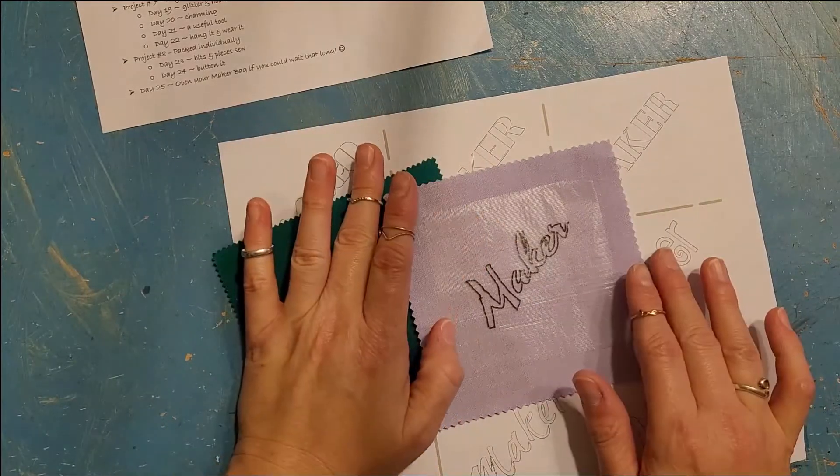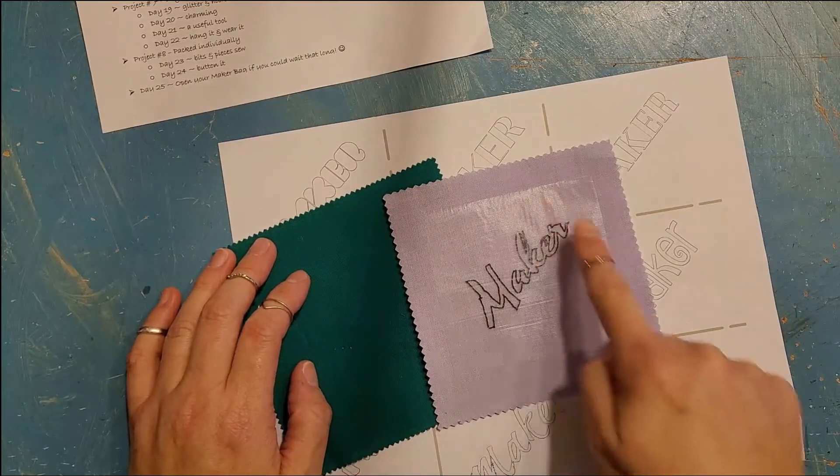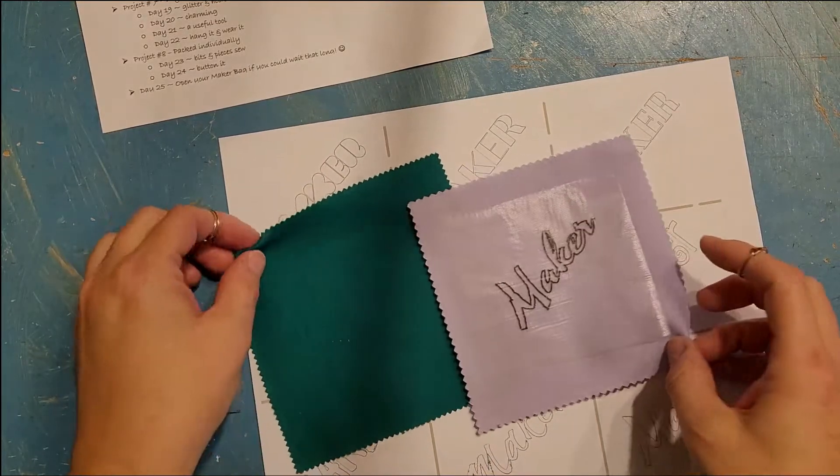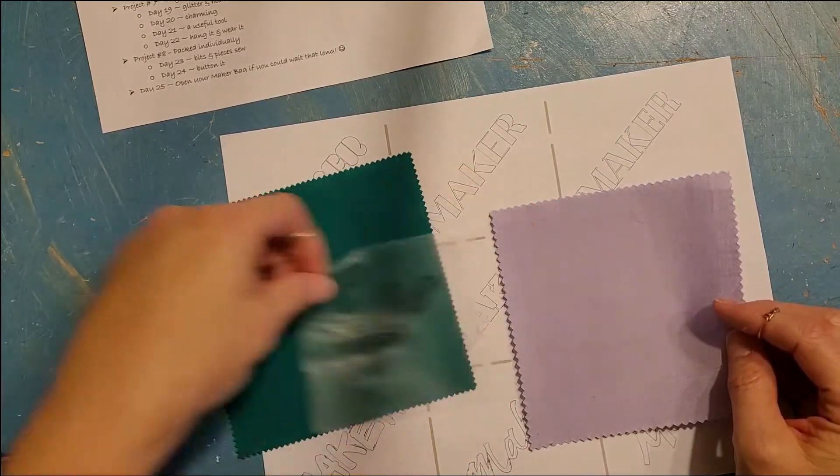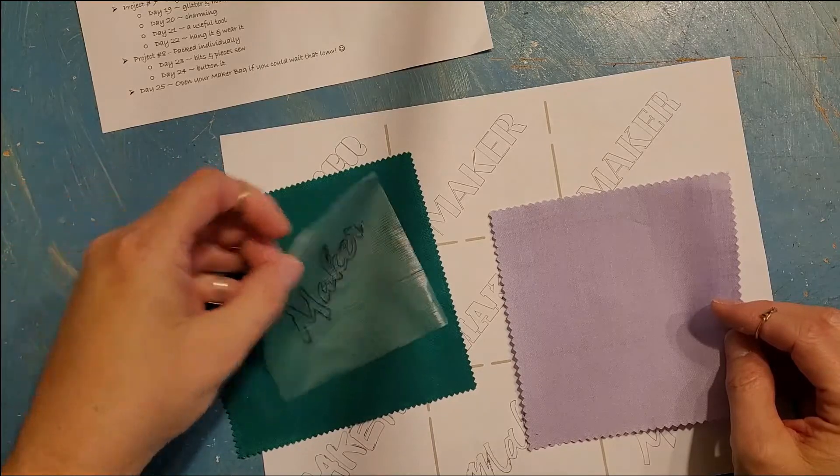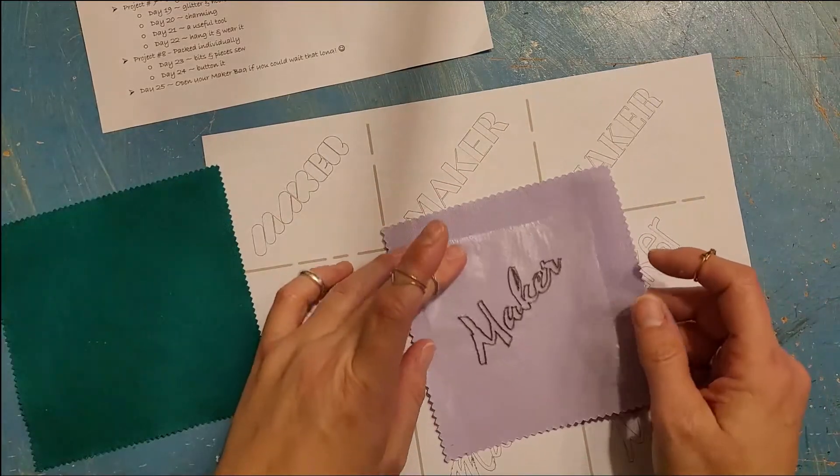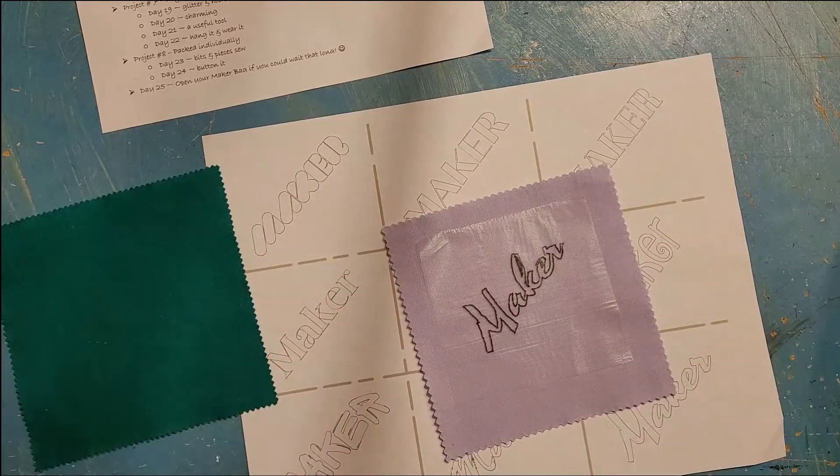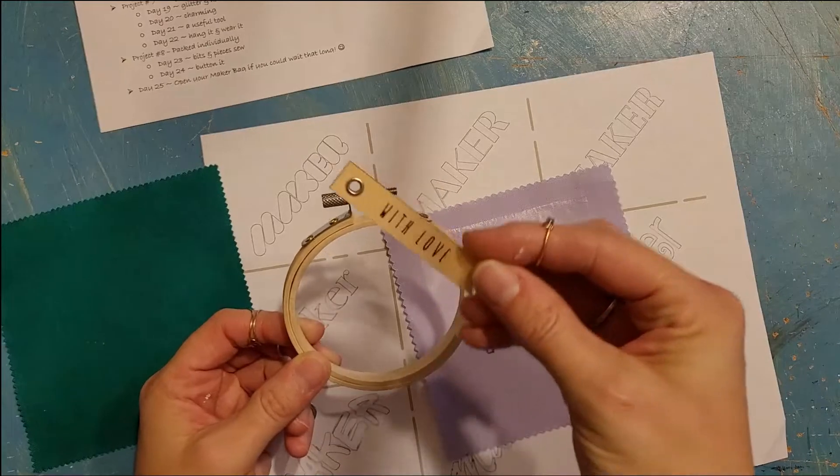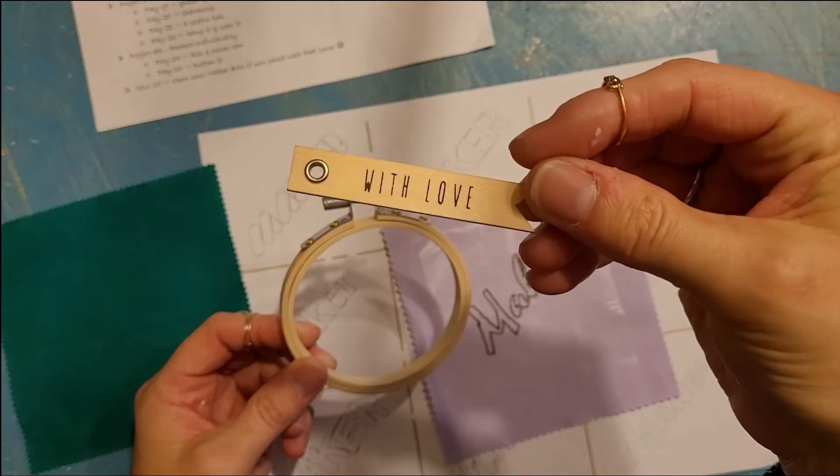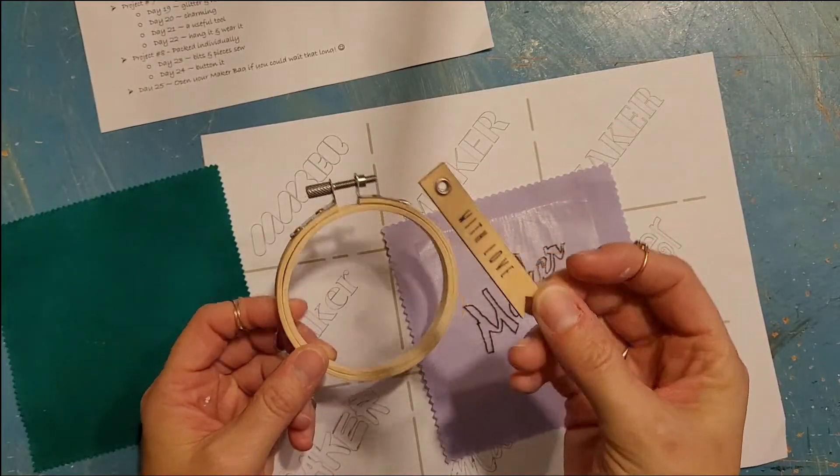We put it on our little piece of Sulky here and picked out our fabric. I was gonna do this one but I don't think y'all are gonna be able to see that very well on camera, so I'm just gonna use this lighter one. So today you received a little mini hoop and this little wooden tag that says with love with a grommet on it.